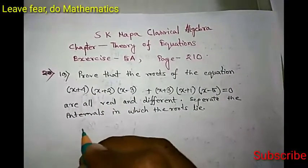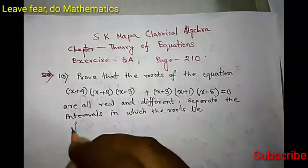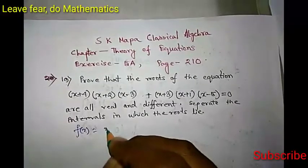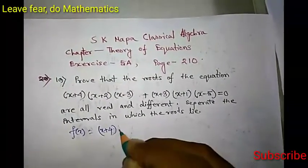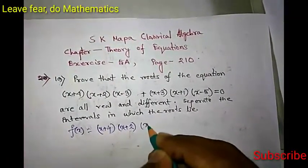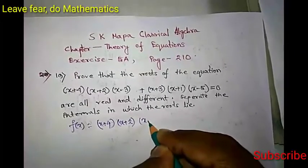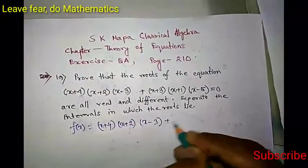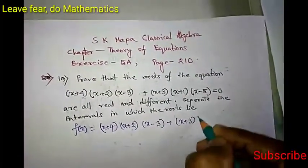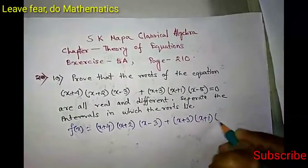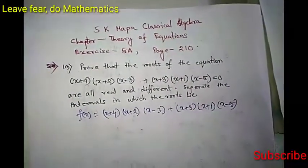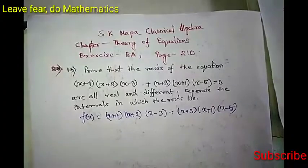The given equation can be considered as f(x) = (x+4)(x+2)(x-3) + (x+3)(x+1)(x-5). We will work with this function f(x).